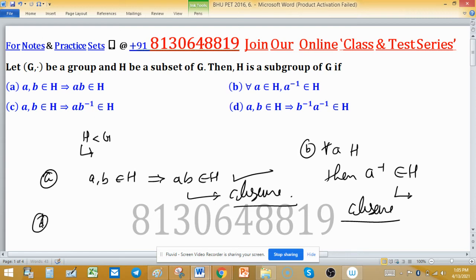Where does option D fail? If AB are in H, then B inverse A inverse also in H. This property is saying elements have closure property, but particularly we say closure property for all elements, but they are combining only inverse elements.